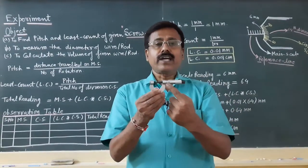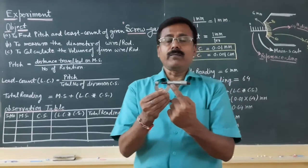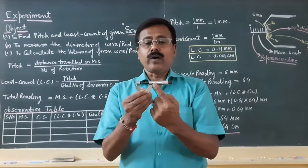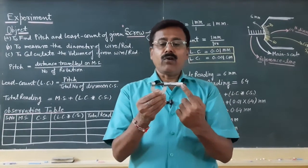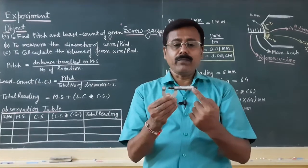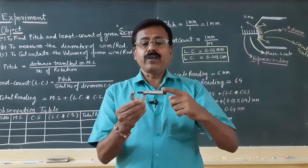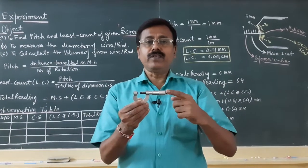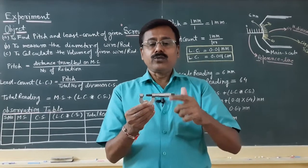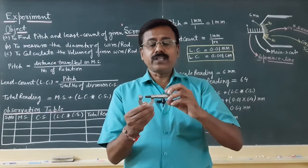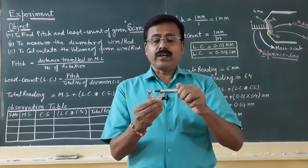On the main scale we have values in terms of millimeters: 1 millimeter, 2 millimeters, and so on up to 10 or 15 millimeters. The circular scale has 100 divisions, starting from 0 to 100, and it rotates over the main scale.